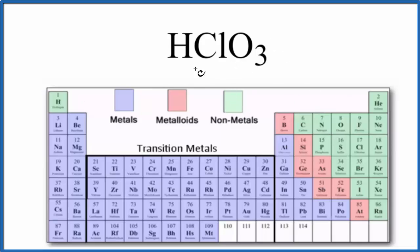So let's look at the periodic table here. We have hydrogen. Hydrogen, that's a non-metal. Chlorine, that is also a non-metal. And then oxygen, that's a non-metal as well. So we have all non-metals.